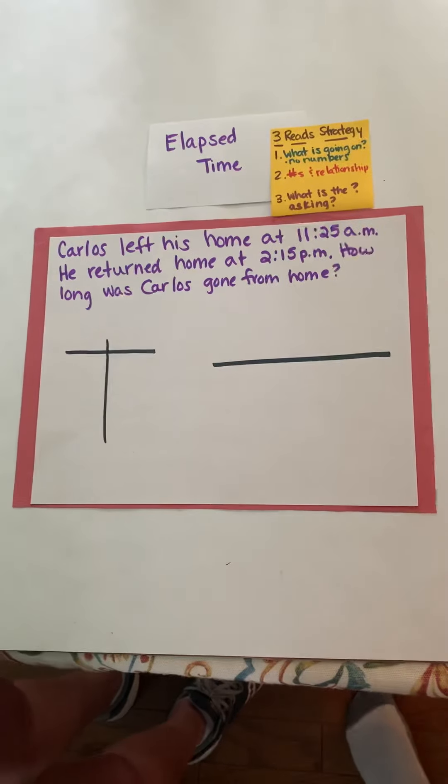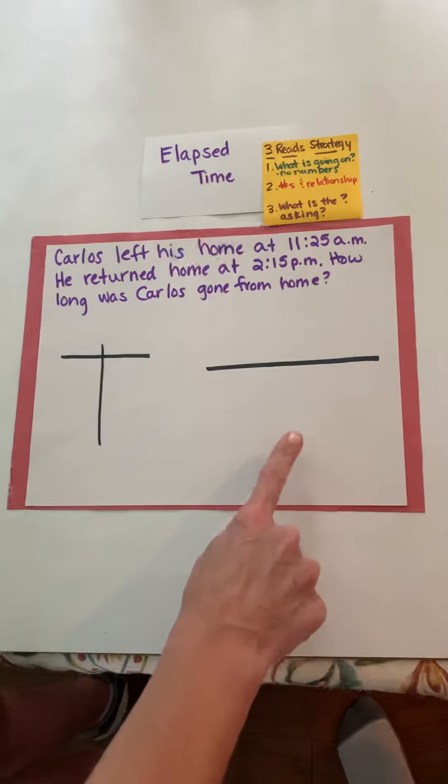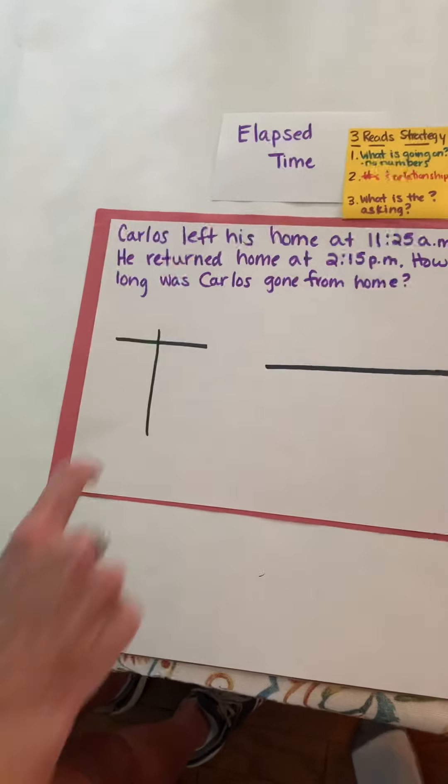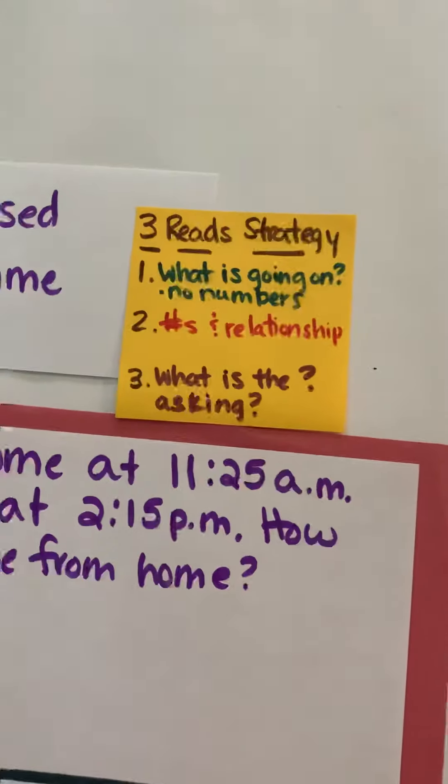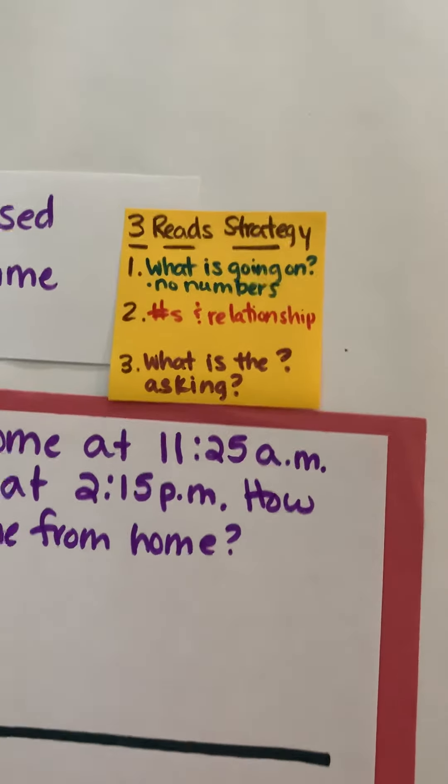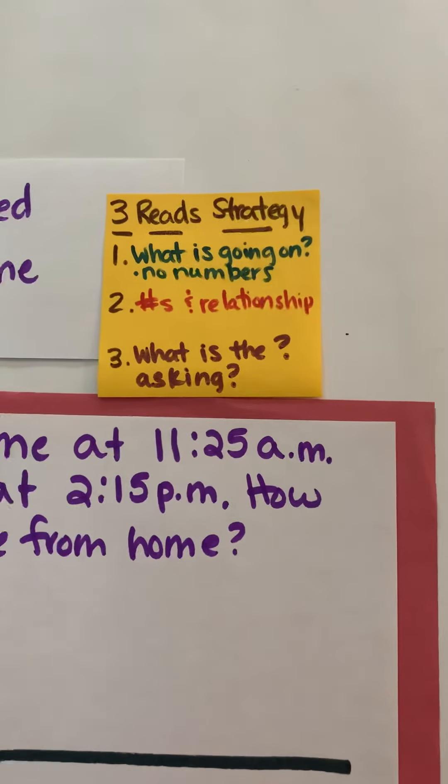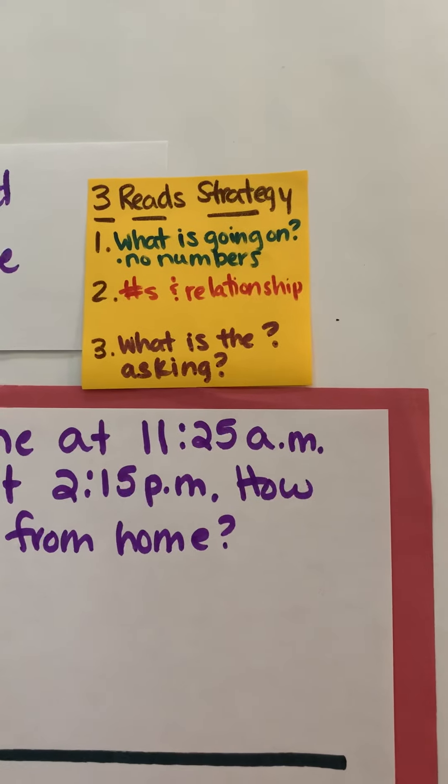We're going to focus on solving elapsed time using not only a number line but the t-chart. All right, so while we do this we're going to use the three reads strategy to help us. You may have seen this in other videos or you may have seen it with your teacher but this really helps us be able to comprehend a word problem.